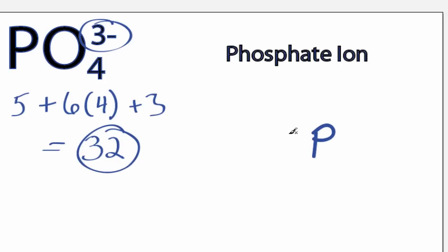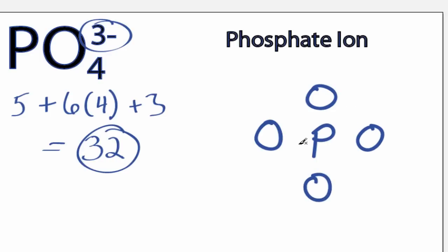Put Phosphate at the center and the Oxygens around it, all 4 of them. We'll draw bonds between the Oxygen and the Phosphorus, forming chemical bonds right here, 2 electrons each. So we've used 8.